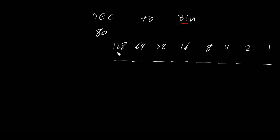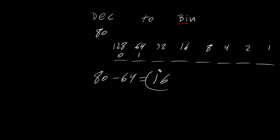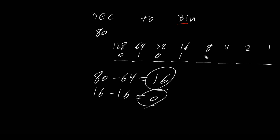Does 80 greater than or equal 128? No, it's not greater than 128. So it's off. Does 80 greater than or equal 64? It is greater. So let's put 1. What is our new value? 80 minus 64 is 16. Does 16 greater than or equal 32? It's not greater. So it's off. Does 16 greater than or equal 16? It is equal. So it's on. 16 minus 16 equals 0. When we have 0, pretty much the rest of them are 0.